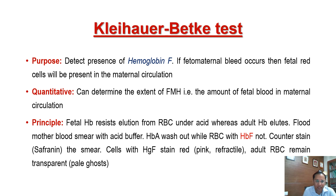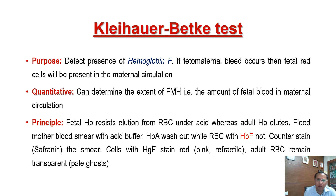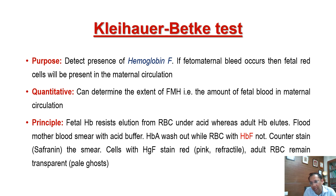Once the rosette test is positive, you proceed to the KB test, or Kleihauer-Betke test. The principle is that fetal haemoglobin (HbF) in fetal RBCs is resistant to acid elution. When you add an acid solution, adult HbA cells from the mother will lyse and look like ghost cells, whereas HbF-containing fetal cells are resistant and will stain bright red.